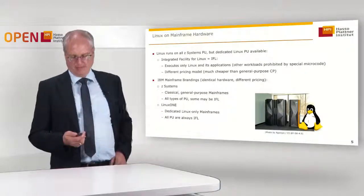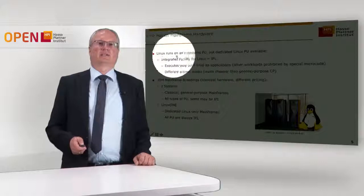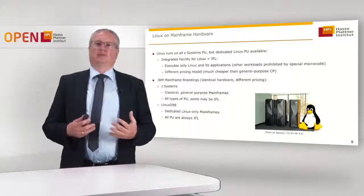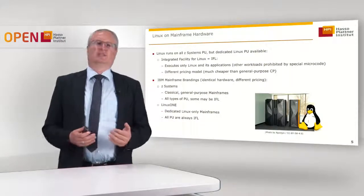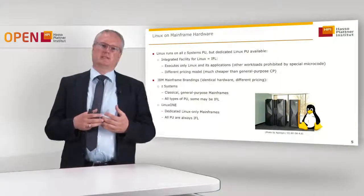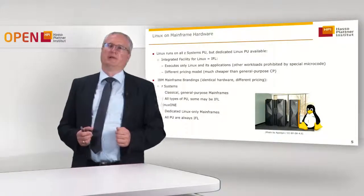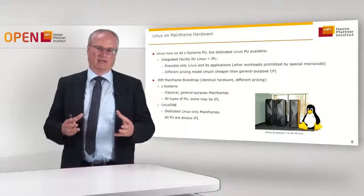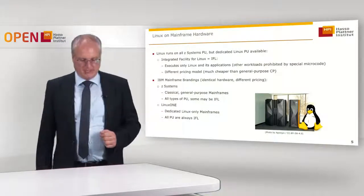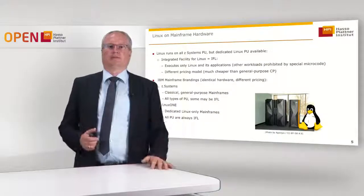Despite this, IBM offers a special type of PU called the IFL — the Integrated Facility for Linux. This is a PU which is, by microcode and firmware, reduced to execute Linux and Linux applications. The difference is not a different PU in hardware — it's the same chip — but its licensing model is different. The IFL will not run z/OS or classical mainframe workloads, but it runs Linux and everything running on Linux. These PUs are licensed at a much lower price than standard CPs despite being physically the same processors. So this is about licensing and fees, not real technology.